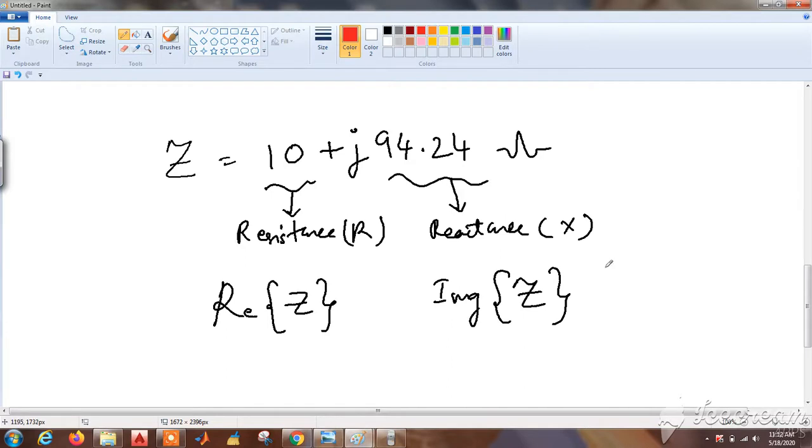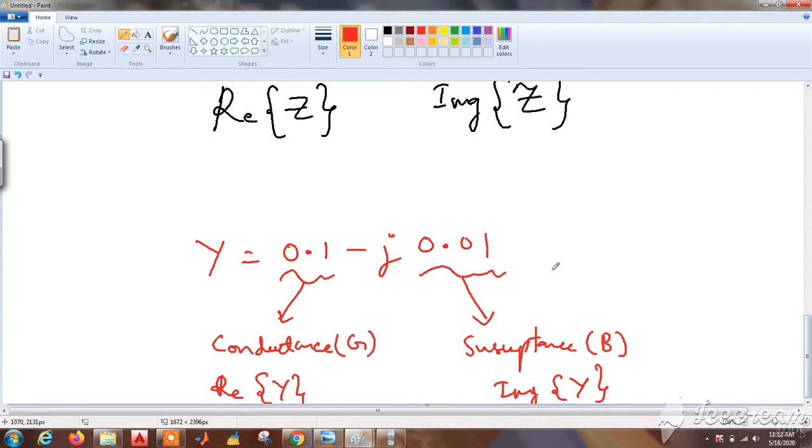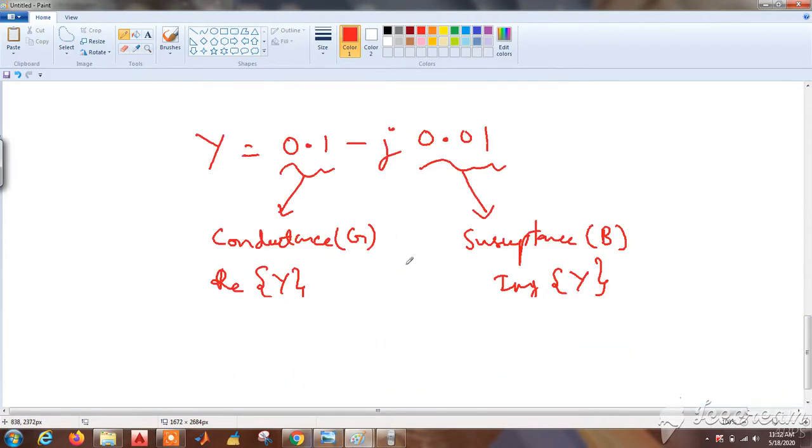We have already seen that the real part of impedance is resistance and the imaginary part of impedance is called reactance. Similarly, the real part of admittance is called conductance and the imaginary part of admittance is called susceptance B.